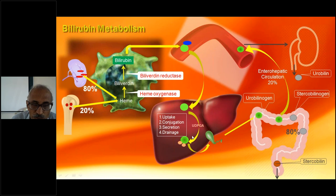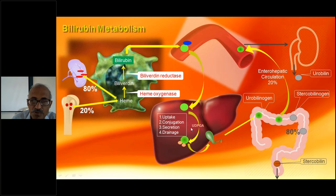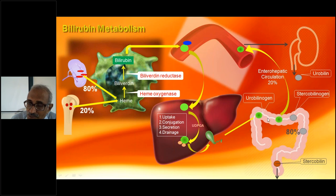This bilirubin is released into the blood and, because it cannot sustain in free form, it gets attached to albumin in the plasma. From here it goes into the liver, where four steps are necessary: uptake of the bilirubin-albumin complex, conjugation with glucuronic acid in the presence of UDP-glucuronyl transferase, secretion into the biliary system, and drainage through the bile duct into the intestines.